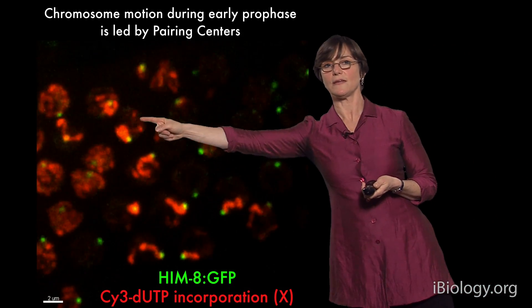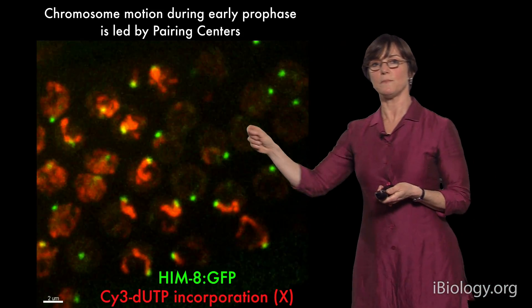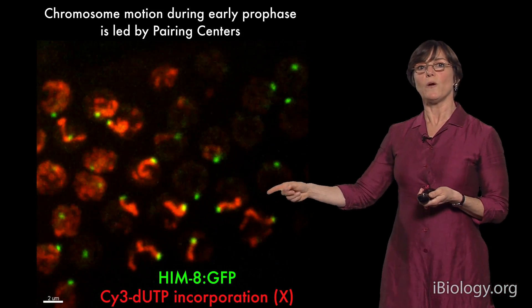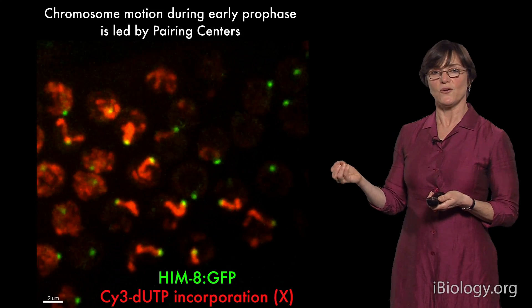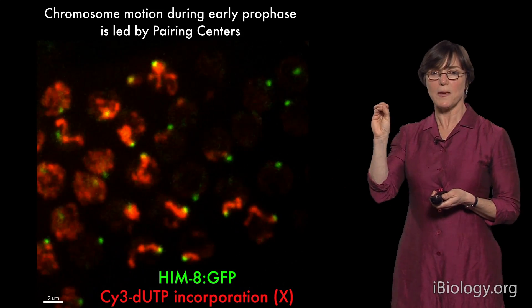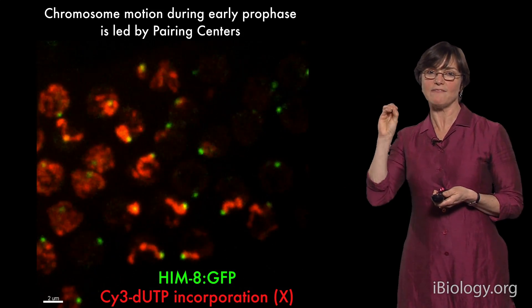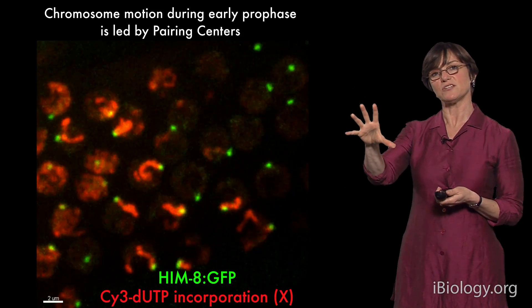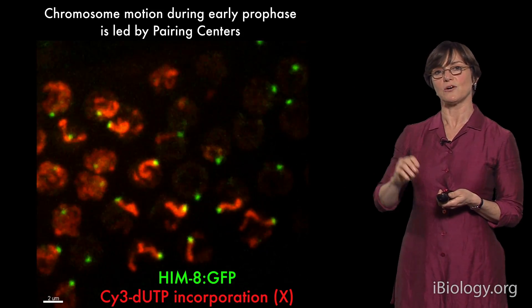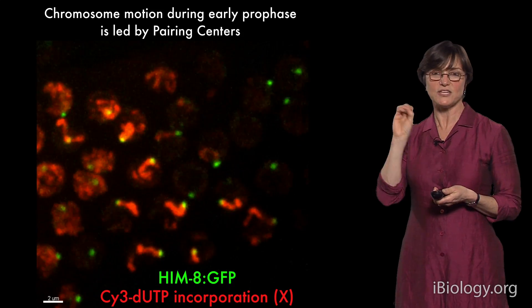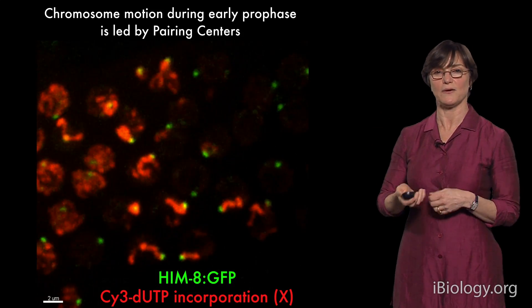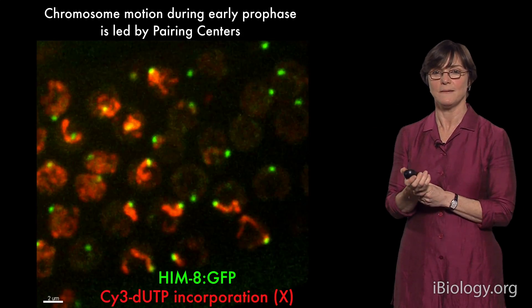In a couple of nuclei, we can see examples where the X chromosomes have paired at their pairing centers but haven't zipped up yet through formation of the synaptonemal complex — so we're catching an intermediate in this process of pairing and synapsis.